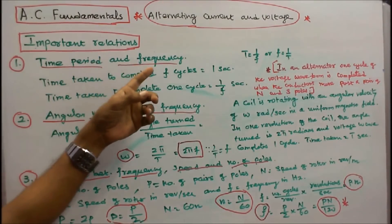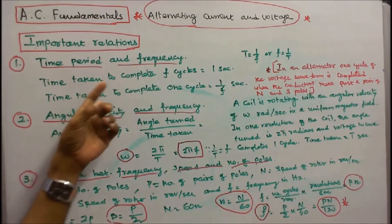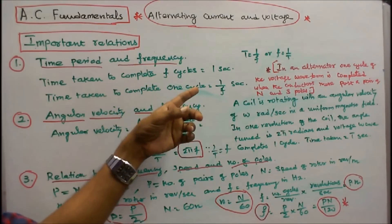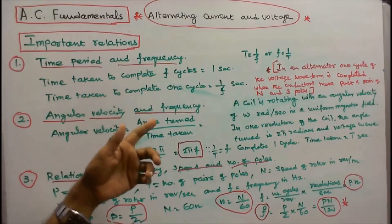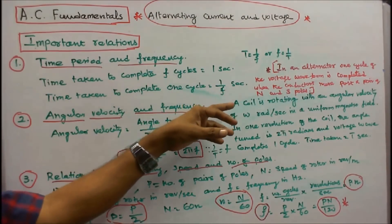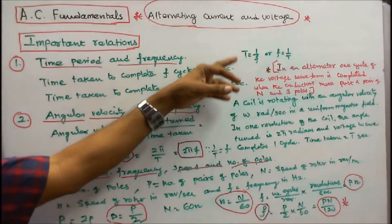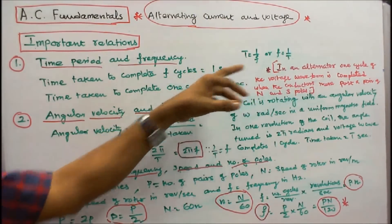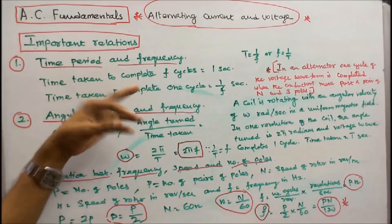Time period and frequency relationship: time taken to complete f cycles is equal to 1 second. Therefore, time taken to complete one cycle is equal to 1 divided by f seconds. We can write capital T equals 1 over f, or f equals 1 over T. That is the relation between time period and frequency.